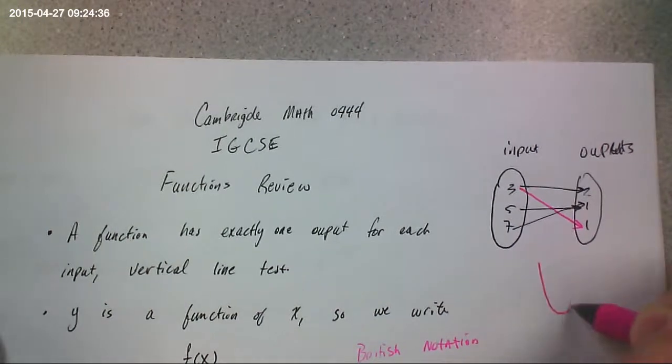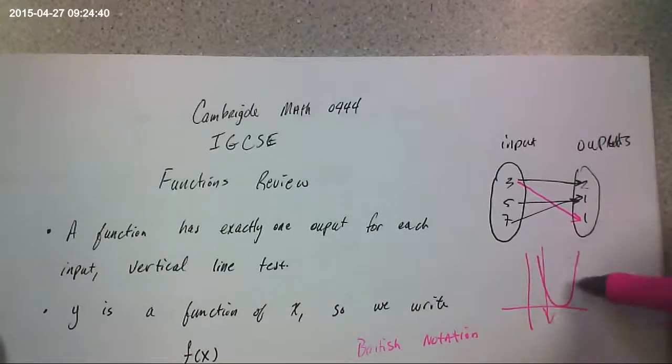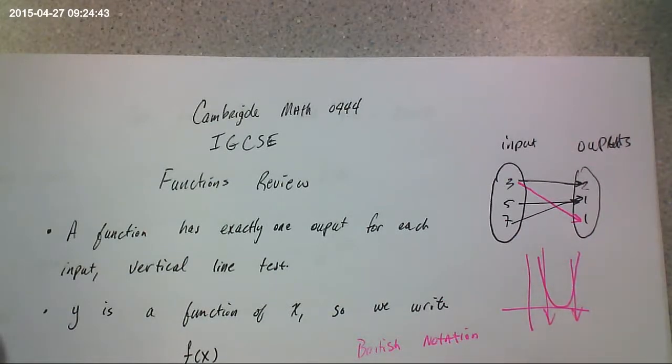Sometimes you see the vertical line test. If you have a graph, if you could pass a vertical line anywhere through the graph and the vertical line touches the graph more than once, then it's not a function.